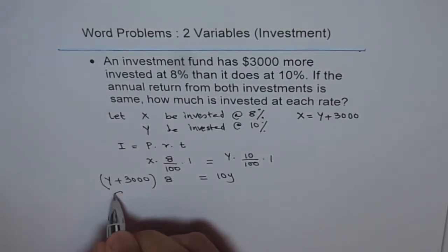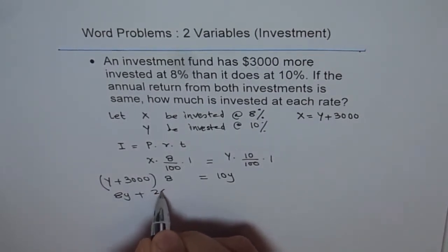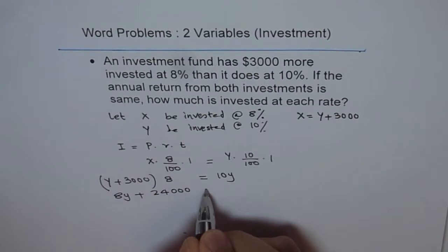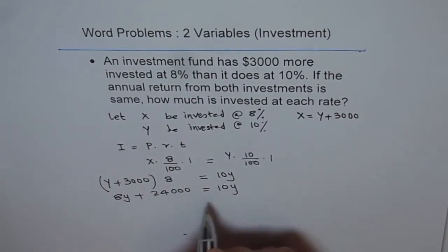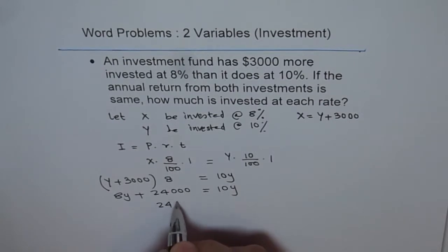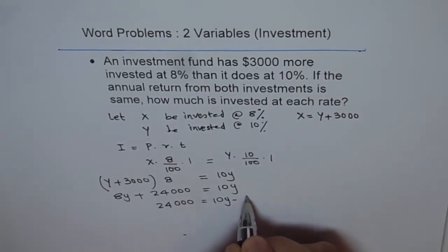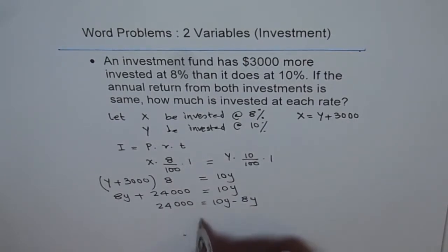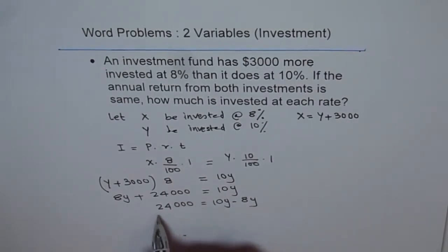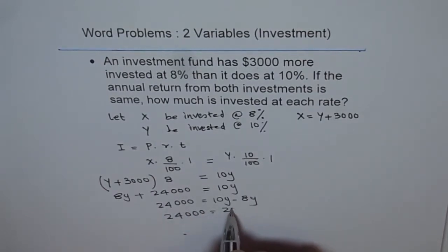Now let's expand it, which is 8Y plus 24,000 equals 10Y. Let's bring Y's together on the right side. So we get 24,000 equals 10Y minus 8Y, and that gives us 24,000 equals 2 times Y.